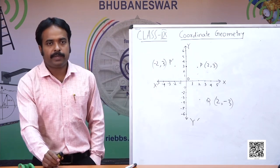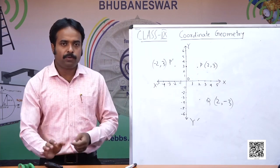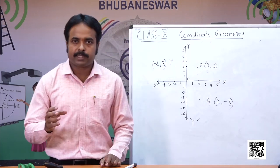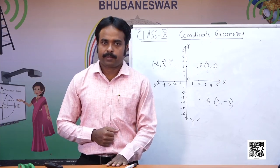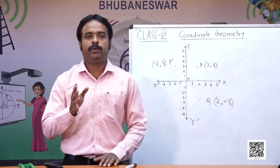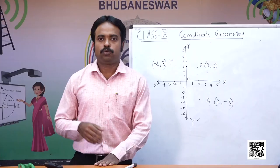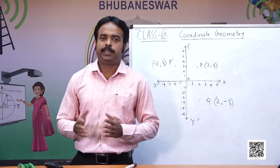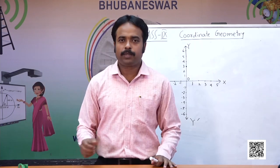Now I may give you one more assignment. Before giving this assignment, I ask you: what would be the image of this triangle ABC with respect to the x-axis? We just found the image with respect to the y-axis. Now it would be your assignment to find out the image of triangle ABC with respect to the x-axis.